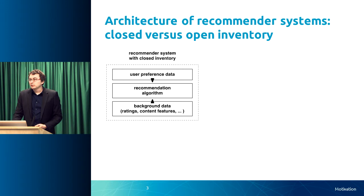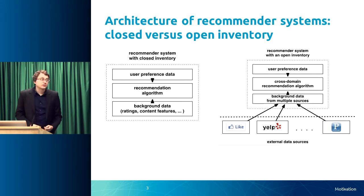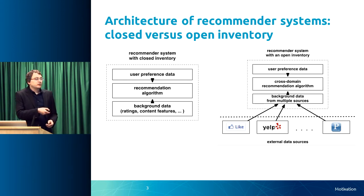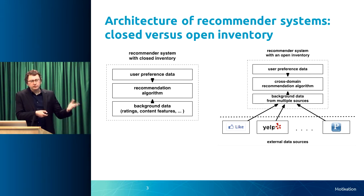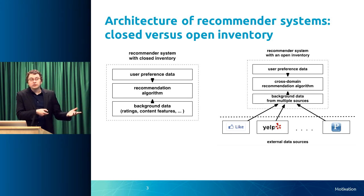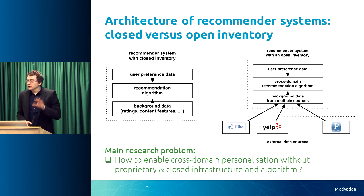Recommender systems such as those used by Facebook are different — they're based on a different architecture. The main important thing is they have an open inventory, with different external sources feeding into that architecture. You can press the like button on external websites, and third-party services interact with Facebook to save your preferences. So the data used to make recommendations is aggregated from multiple sources.